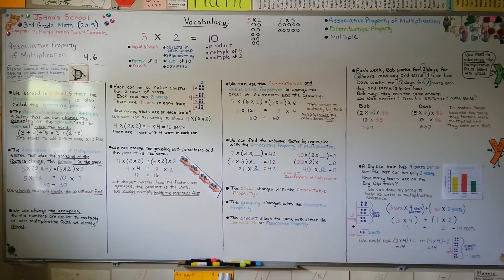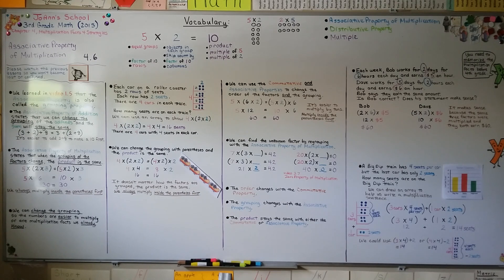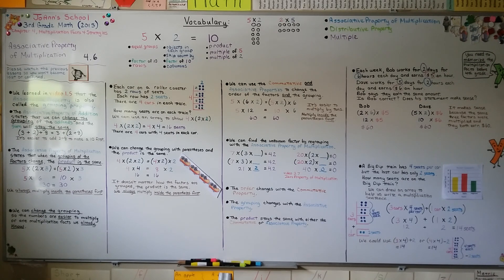Remember, the associative property of multiplication is the grouping property — it tells us we can regroup factors to make multiplication easier, using facts we already know. We can also change the order with the commutative property and then change the grouping, and the product will stay the same with either property. I hope you're doing very well — have a nice day, and I'll see you next time. Bye!